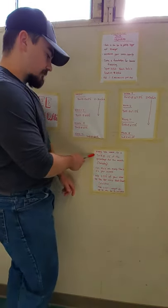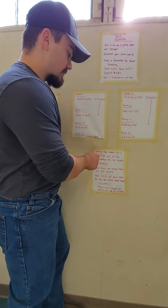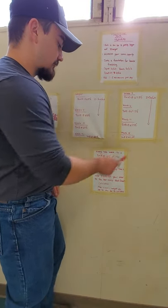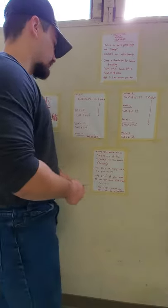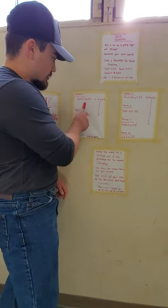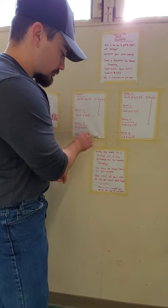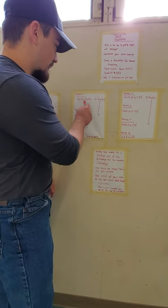Down here, every fourth week, do a three by eight. So three sets of eight with minus five percent from what you're working with for the block. Week one, you're working with 65%. Week four, you do three by eight with minus five percent, so you go down to 60% from 65%.